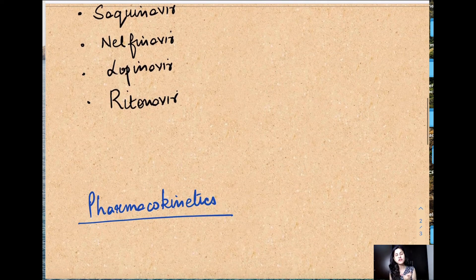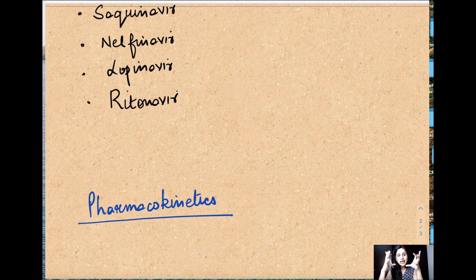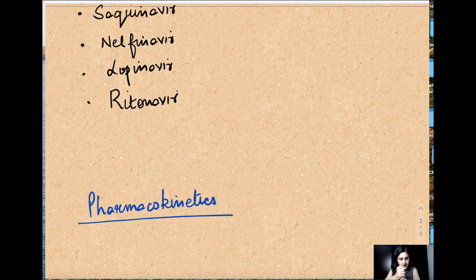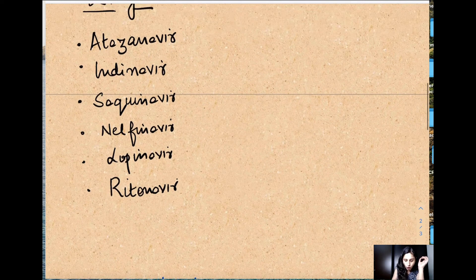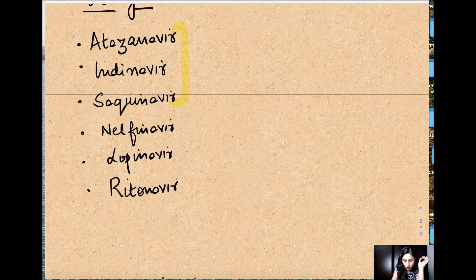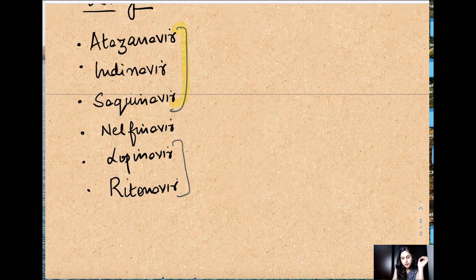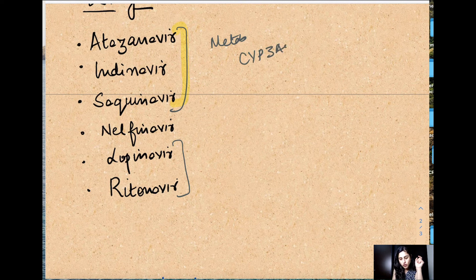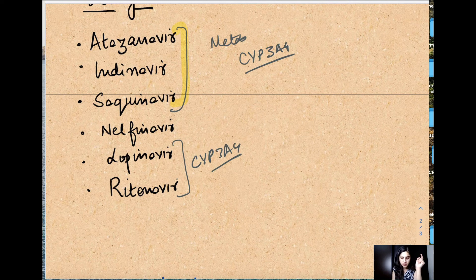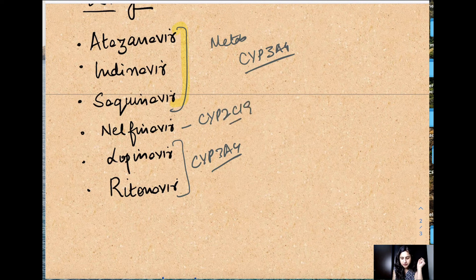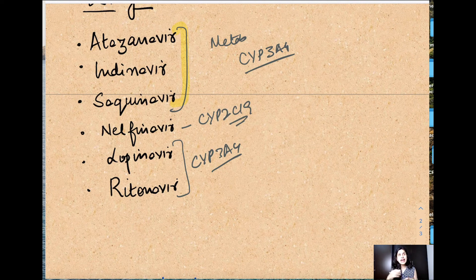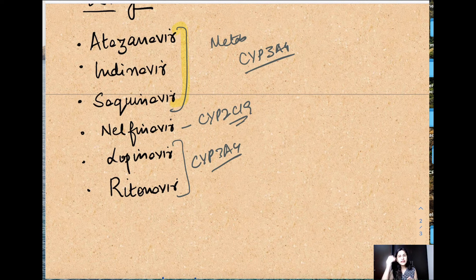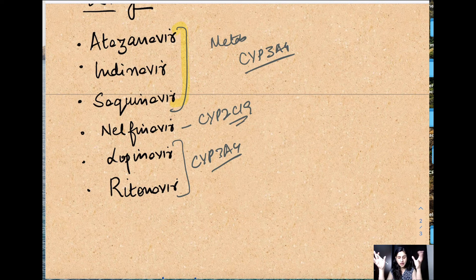What I'd like to lay stress on in this video about the boosted PI regime is mostly based on their pharmacokinetic characteristics. All of them, all of them here except nelfinavir, they get metabolized by cytochrome CYP3A4. Nelfinavir is metabolized by CYP2C19.